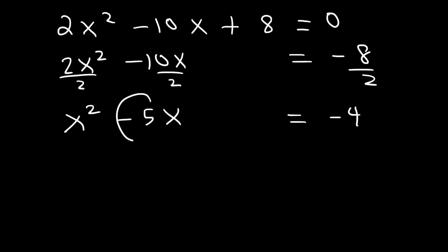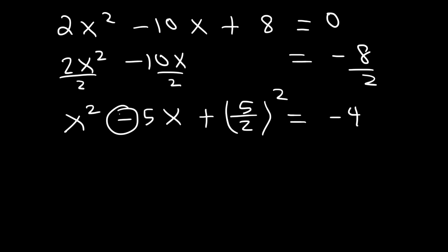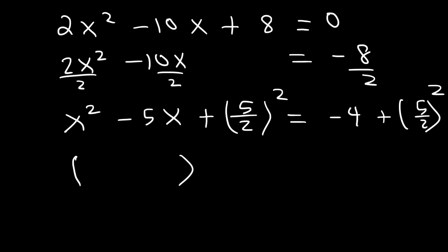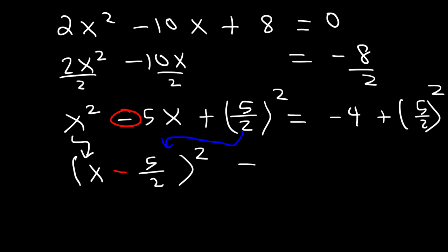Now let's complete the square. Half of 5 is 5 over 2, and then square it. Don't include the negative sign, because once you square it it's going to be positive anyway. Whatever you do to the left you must do to the right, so let's add 5 over 2 squared to the right side. How can we factor this expression? We have an x, then a minus sign, then whatever is here. So it's going to be x minus 5 over 2, squared. This is when knowing this technique becomes a lot easier, because you don't want to factor a trinomial that has a fraction like 25 over 4.